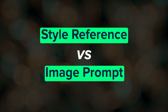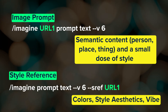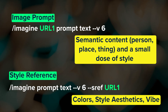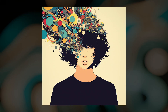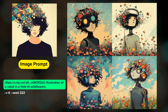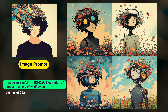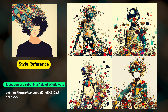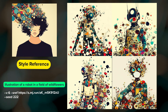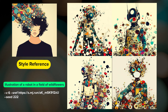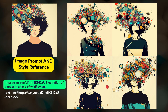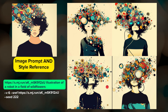You may be wondering: what is the difference between a style reference and an image prompt? When you use an image prompt, your image URL goes at the beginning of the prompt instead of after a dash-dash parameter. The purpose of an image prompt is to bring in the semantic content from the image — things like characters, places, and things. When I use this image as an image prompt with the text 'illustration of a robot in a field of wildflowers,' I get some robot-like features but the boy from the reference image is clearly visible, as are the colorful shapes coming out of his head. If I use that same image as a style reference, Midjourney pulls out the visual aesthetics, colors, and overall vibe of the image — my robot looks much more like a robot and the color palette is near identical to the reference. You could even use an image as both an image prompt and a style reference, which is useful if you're trying to get both consistent characters and consistent aesthetics.